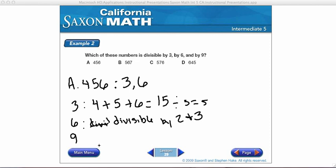Now, if it's divisible by 9, then the sum of my digits must be divisible by 9. Well, I already know that the sum of my digits, 4 plus 5 plus 6 equals 15. But 15 is not divisible by 9, so 9 is not a factor. So which of these numbers is divisible by 3, 6, and 9? 456 is not, because it's only divisible by 3 and by 6.